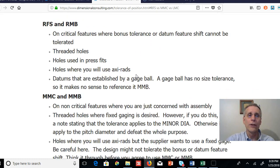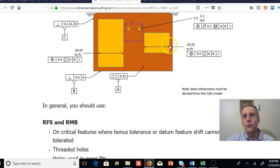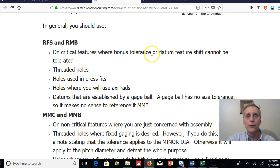So just in general, we use RFS and RMB. We use RFS and regardless of material boundaries, which is when you put the M's by the datum references, on critical features where bonus tolerance or datum shift cannot be tolerated. Remember, we use RFS on threaded holes. Why do we use RFS on threaded holes? Because when you put the bolts in the holes, the bolts are going to automatically center themselves in the threads.